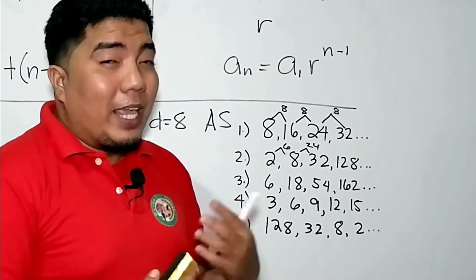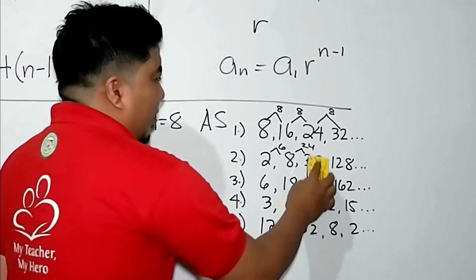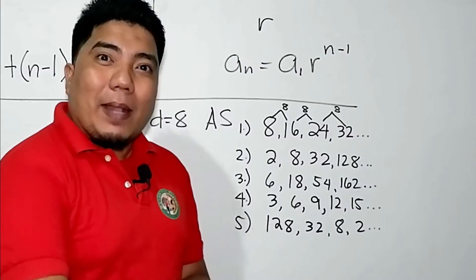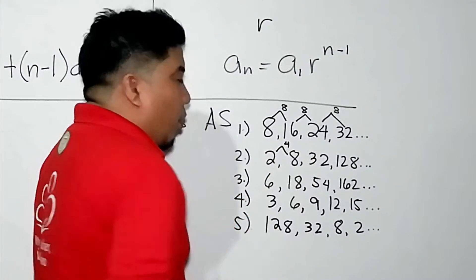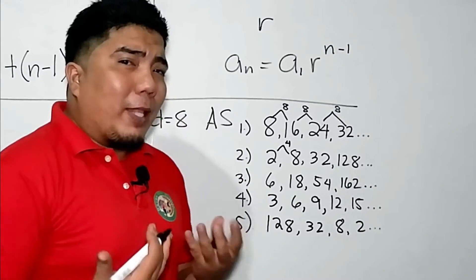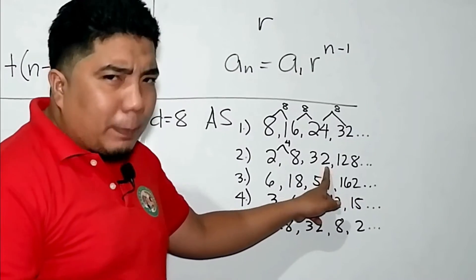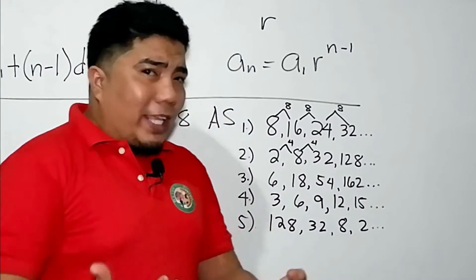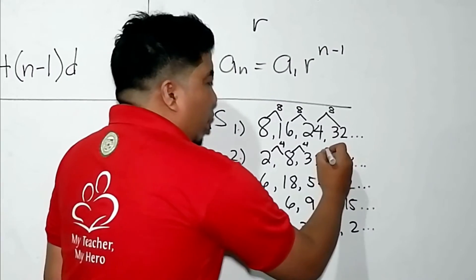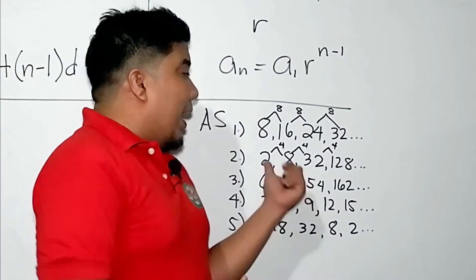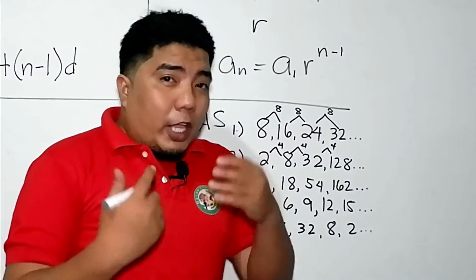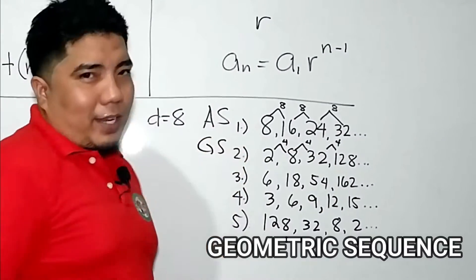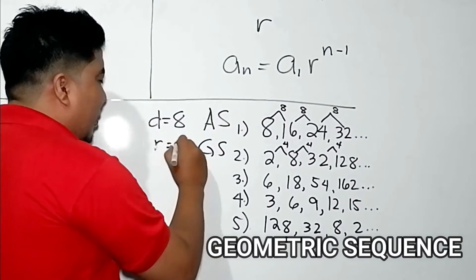Since the differences are not common, it is not addition or subtraction — instead, it is either multiplication or division. Let's ask ourselves: what happened to 2 to make it 8? The factor multiplied is positive 4. What happened to 8 to make it 32? Also multiplied by 4. What happened to 32 to make it 128? Again, multiplied by 4. Since the sequence uses multiplication to get the next term, we can say this is a geometric sequence, and the common ratio is positive 4.